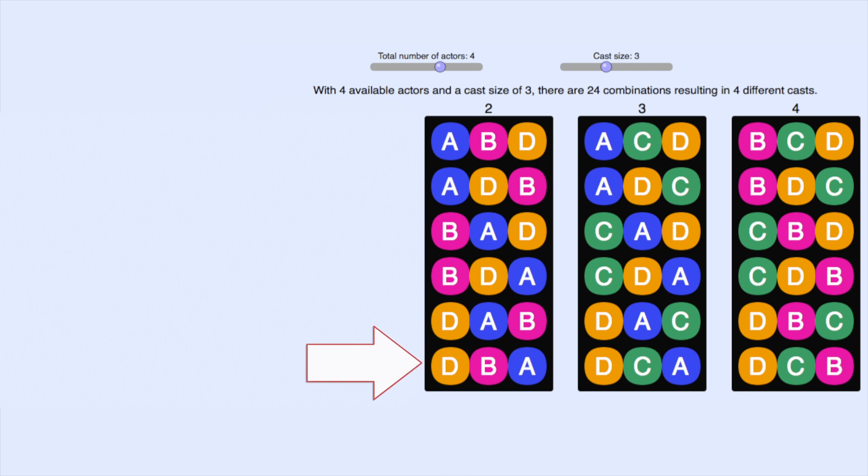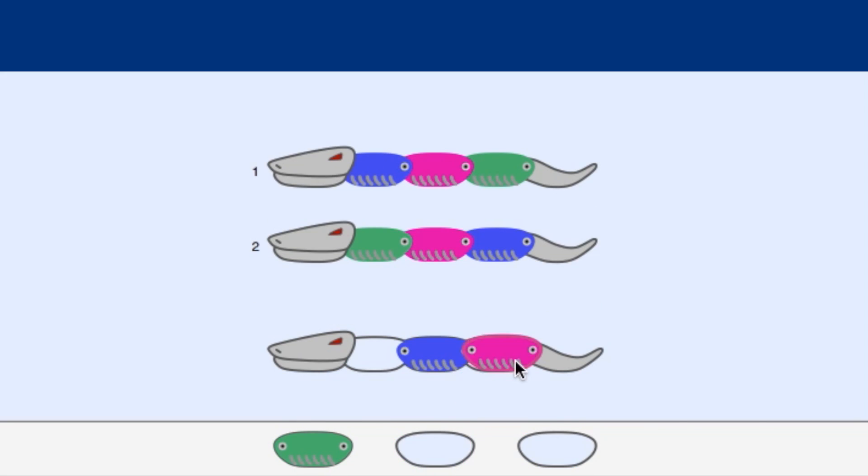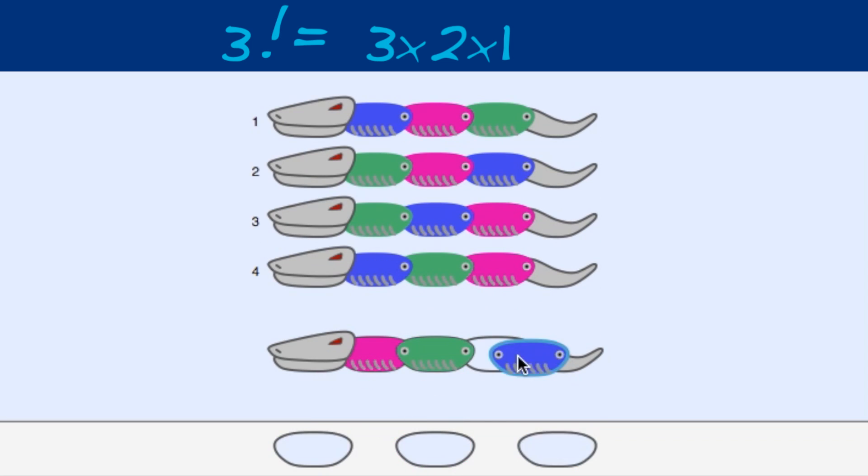How many orderings, or permutations, are there of three things? We saw earlier that there are three factorial, or six permutations.